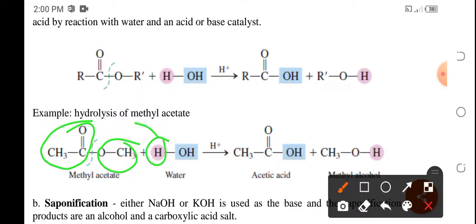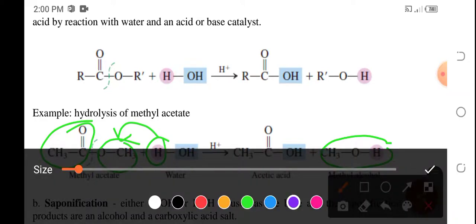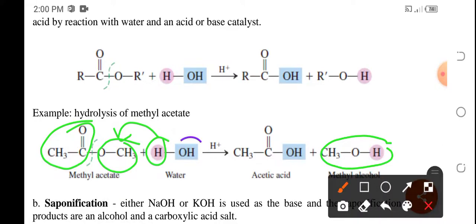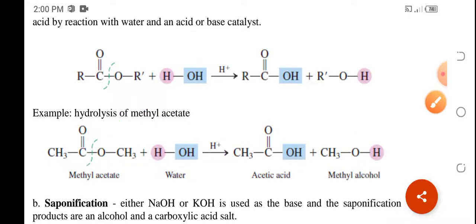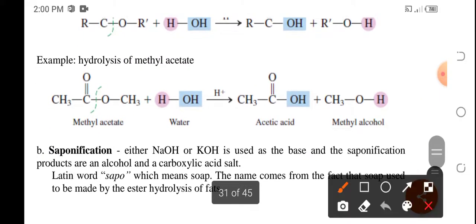So hydrogen will be added to the alcohol part, so we're going to have the methyl alcohol. And the hydroxyl part of the water will be added to the acid part. Hence, we're going to produce acetic acid — from the acetate, it becomes acetic acid, and the methyl becomes methyl alcohol.